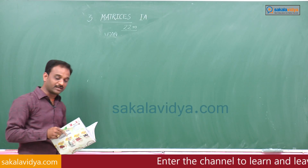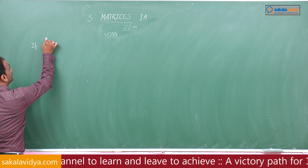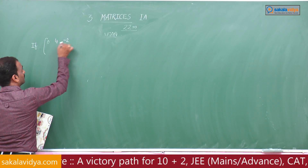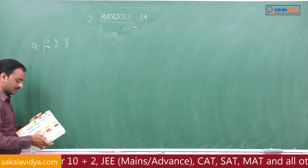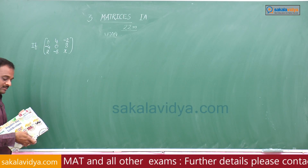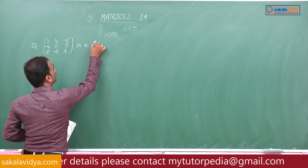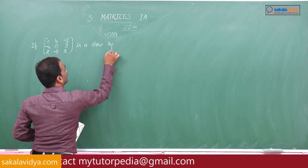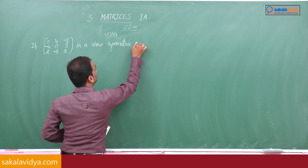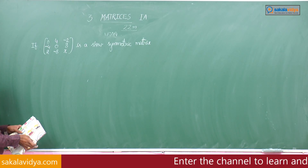Problem number 15. If the matrix is given by 0, 4, minus 2, minus 4, 0, 8, 2, minus 8x and it is a skew symmetric matrix, then find the value of x.